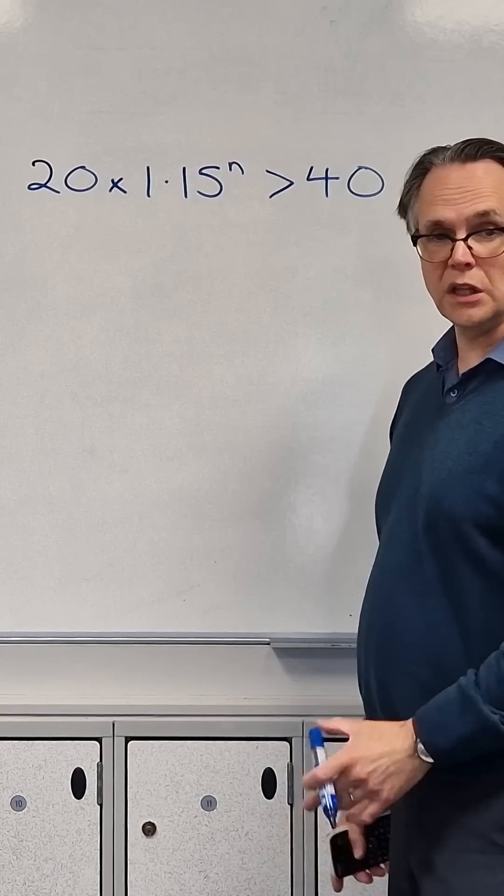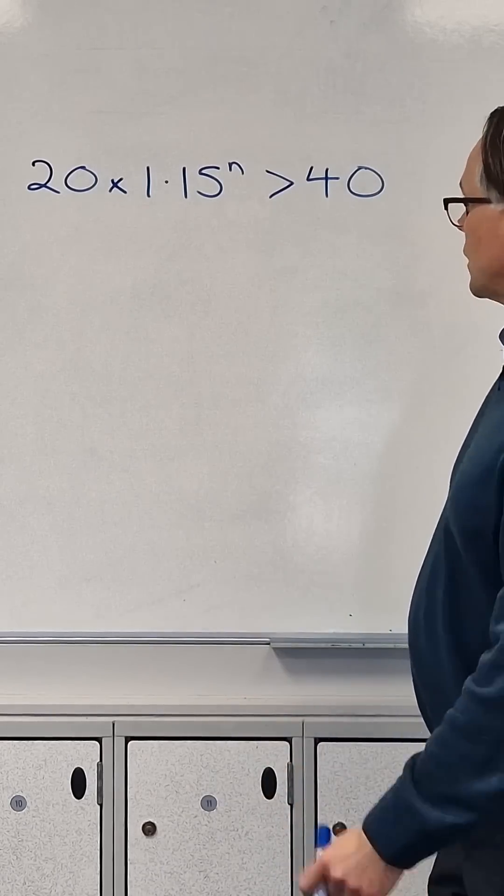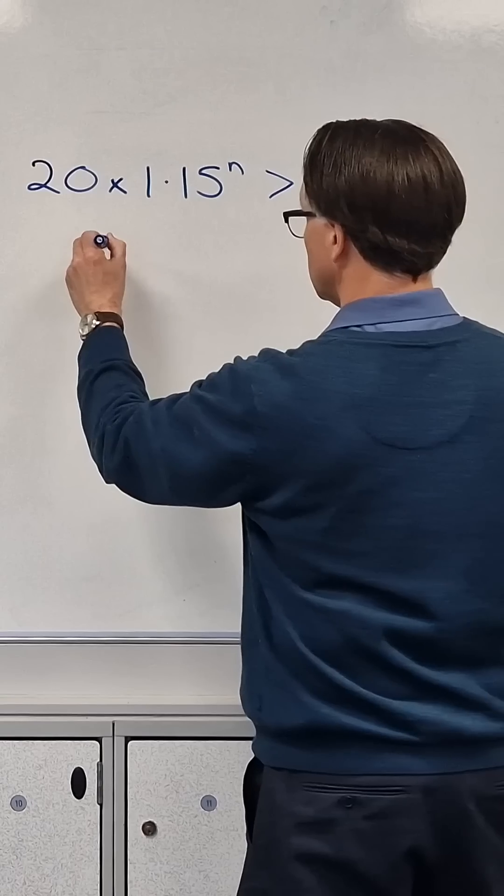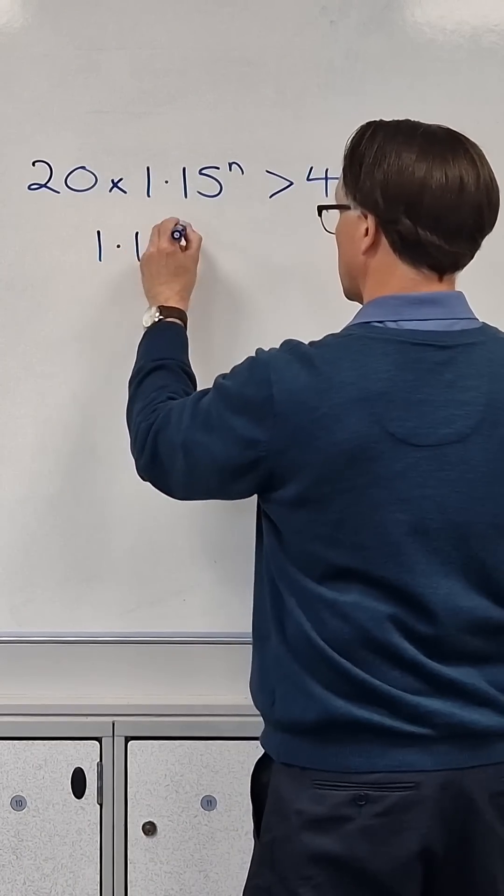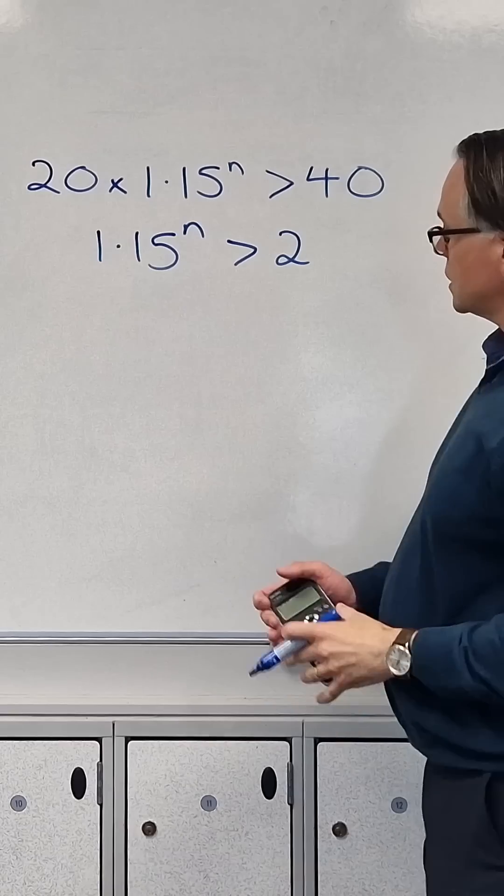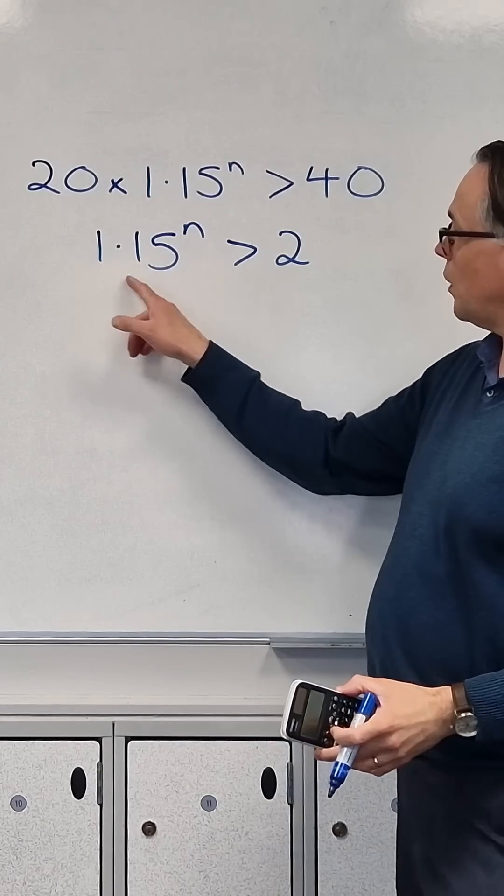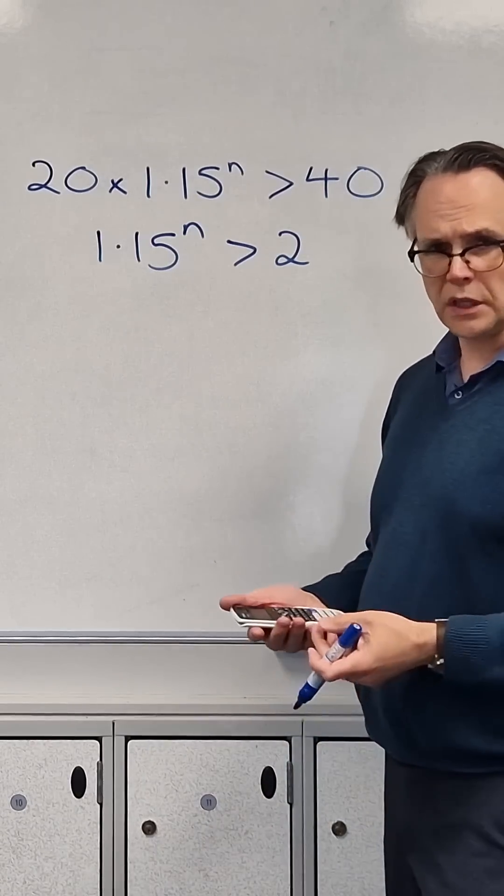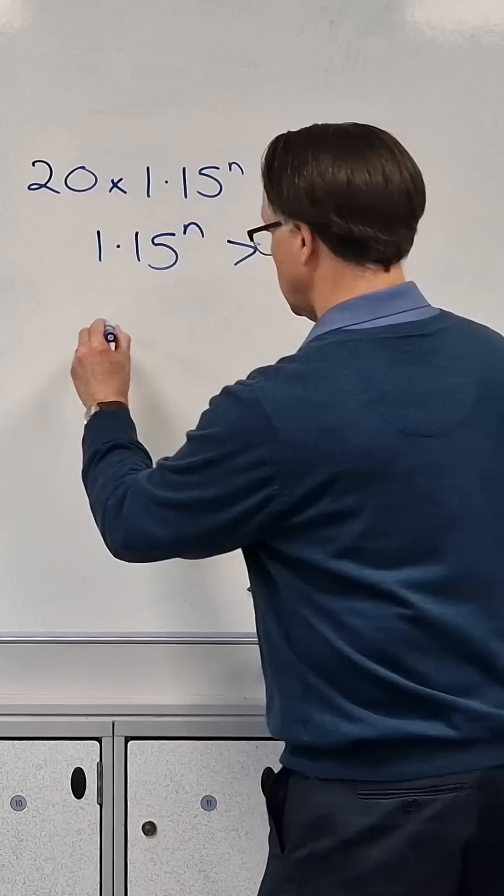So this is equivalent to saying, if we divide both sides by 20, we get that. And so what we want to know is what power of 1.15 is 2. So we can use the log button and say log to the base 1.15 of 2 equals...